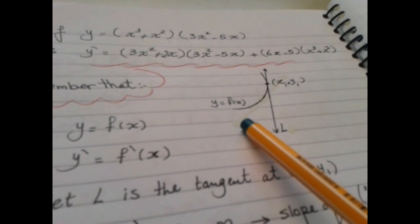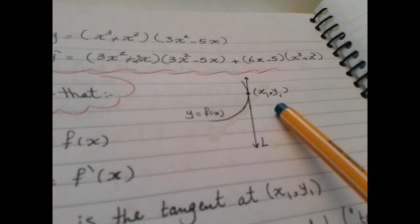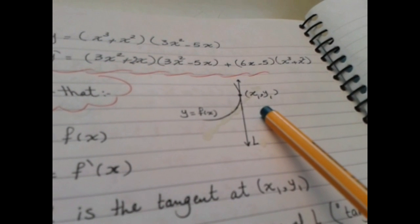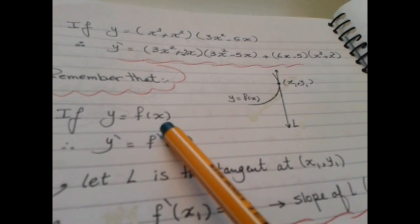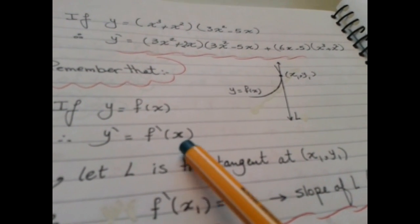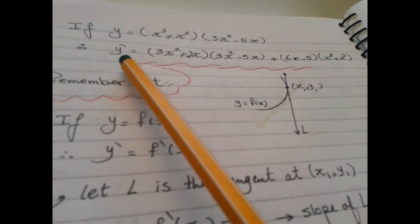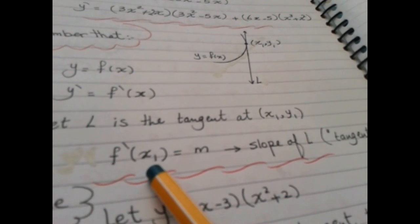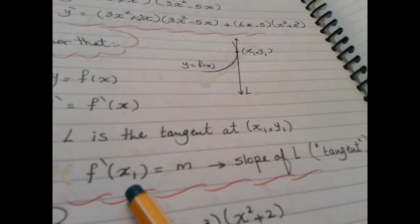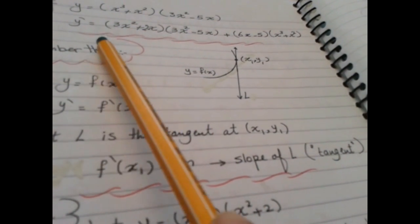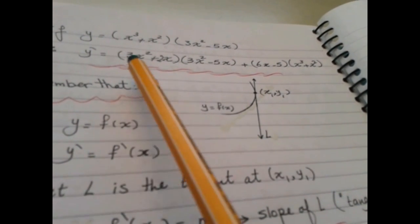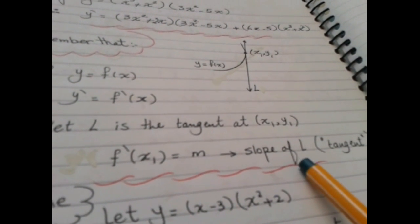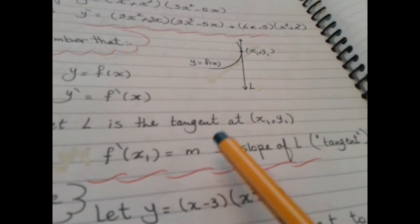Remember that if you have the curve y = f(x) and a point (x₁, y₁) belonging to both the line and the curve, then y' is another function of x. If l is a tangent at the point (x₁, y₁), then f'(x₁) means you substitute x₁ into y'. If you substitute x₁ into y' and get a number, that number is the slope of the tangent line l.